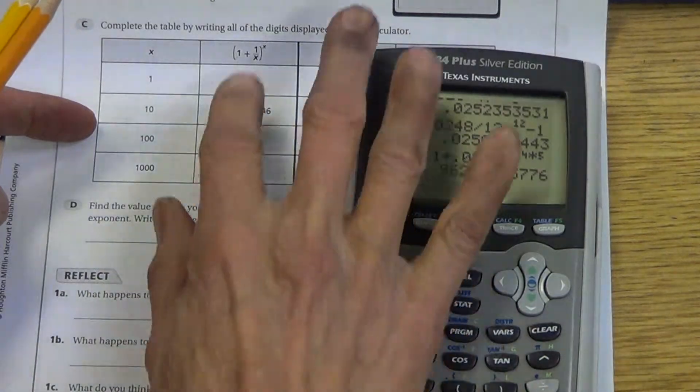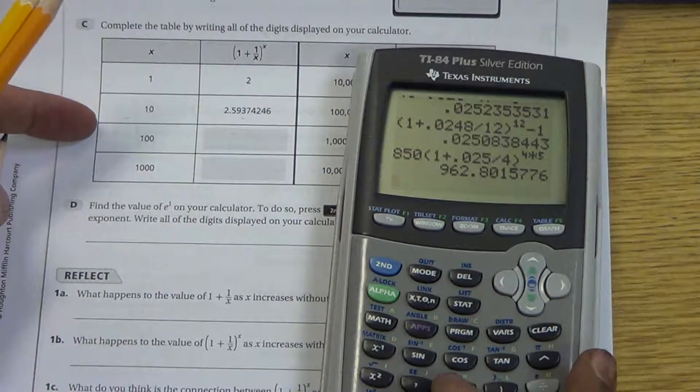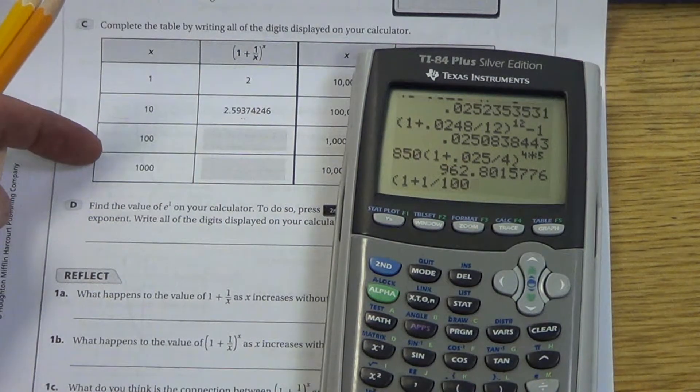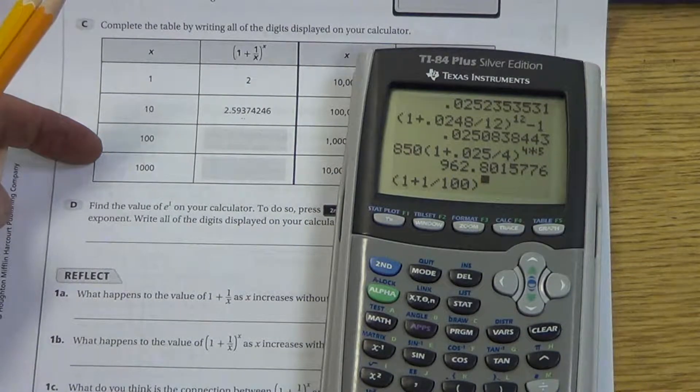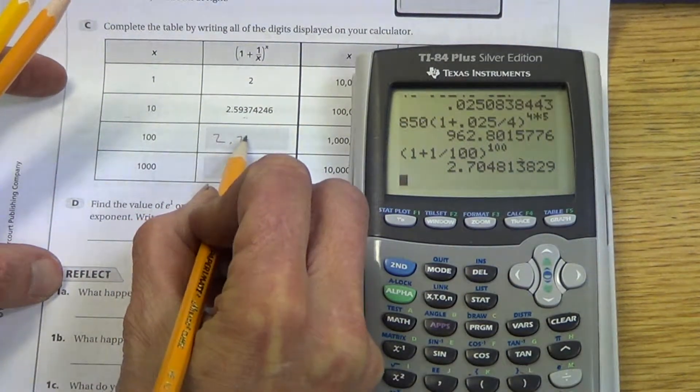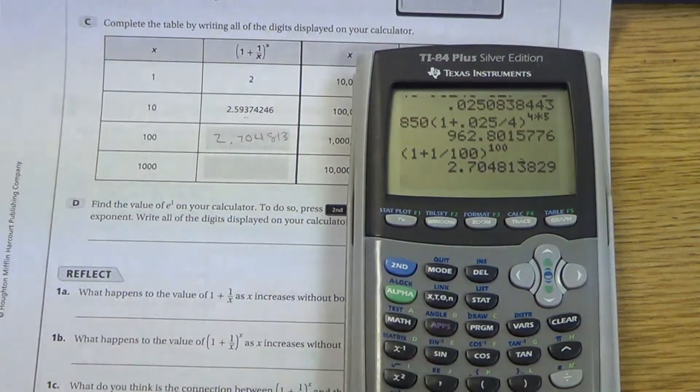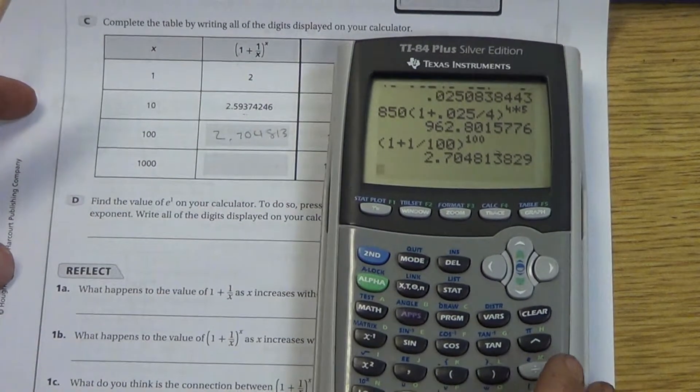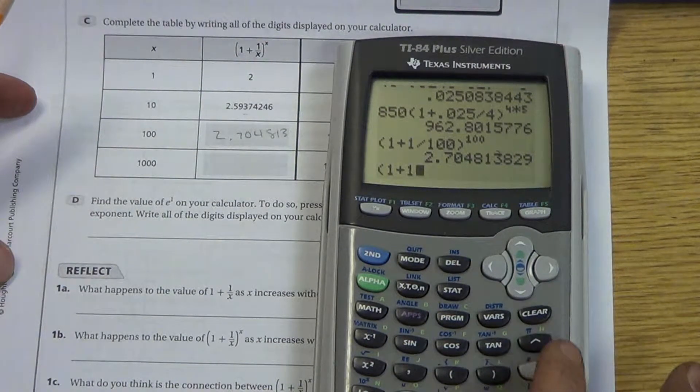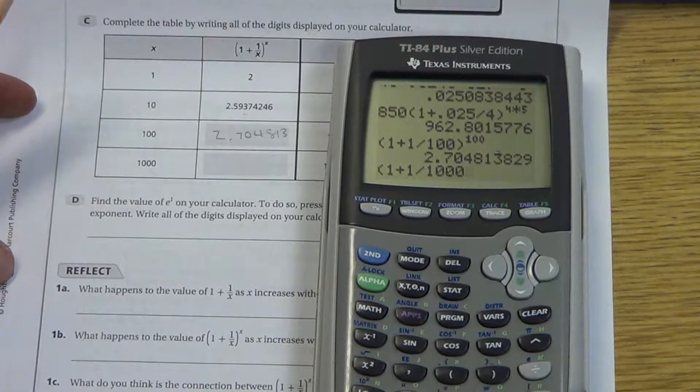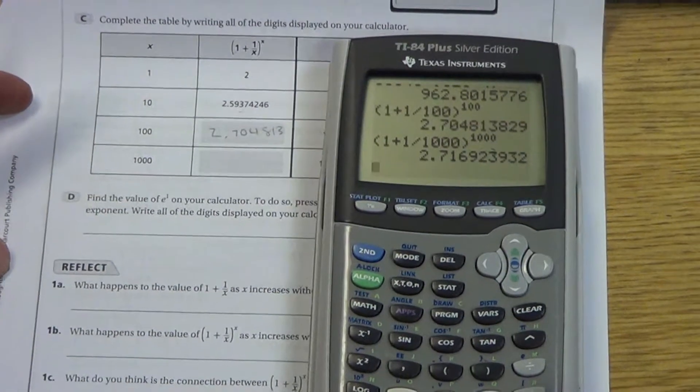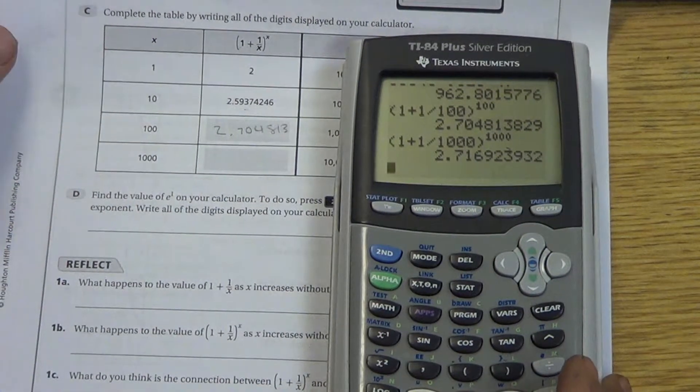What's going to happen as this x value gets increasingly big? Well, let's just play with this. 1 plus 1 divided by 100 this time, raised to the 100, equals 2.704813. That's far enough. Now if we go 1 plus 1 over 1,000. So we're increasing x without bound, raising it to the 1,000, 2.16923, you can get that filled in.